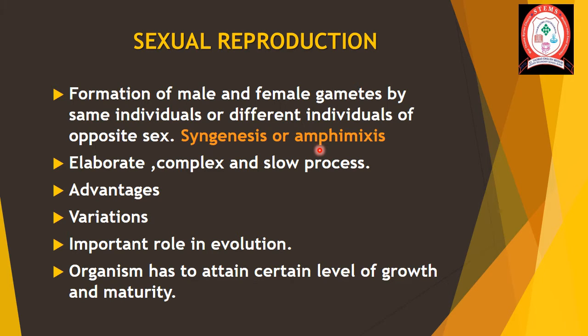These gametes fuse to form a new cell called zygote, which grows and develops into a new individual. A fusion of male and female gametes is involved. The offspring produced are neither identical to the parents nor among themselves. In comparison to asexual reproduction, it is an elaborate, complex and slow process.